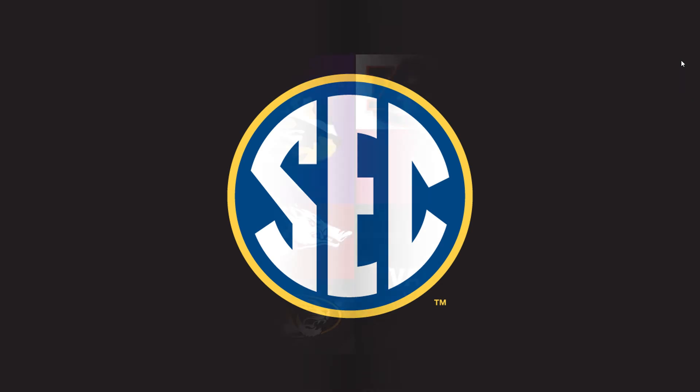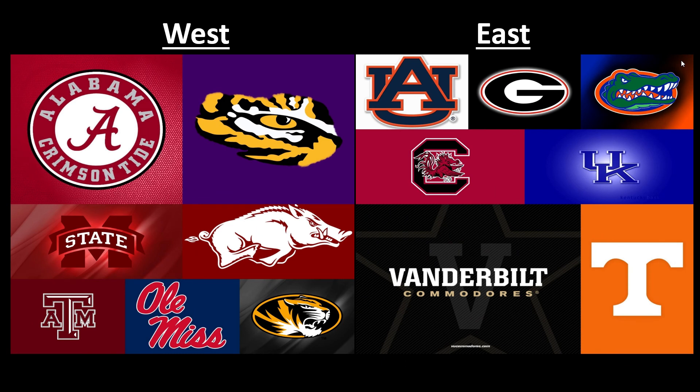Last but not least, the SEC — there's really no big change. All I did was switch Auburn and Missouri, because that made the most sense. Everybody has been talking about Auburn moving to the East for a while. Now you'd have Auburn, Georgia, and Florida as the three best teams on that side, and Alabama, LSU, and A&M in the West. You can still keep the Iron Bowl rivalry at the end of the season, and you could even have them meet in the SEC championship game.